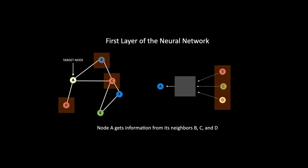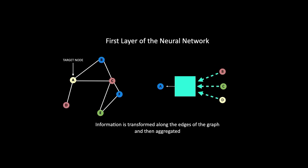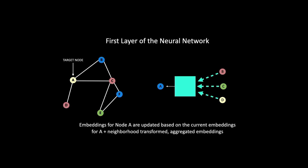Message passing is used to pass information to update the embeddings for node A. This information is transformed along the edges of the graph, then aggregated together and used to update node A's embeddings. Embeddings for node A are updated based on the current embeddings for A, plus the neighborhood transformed aggregated embeddings.